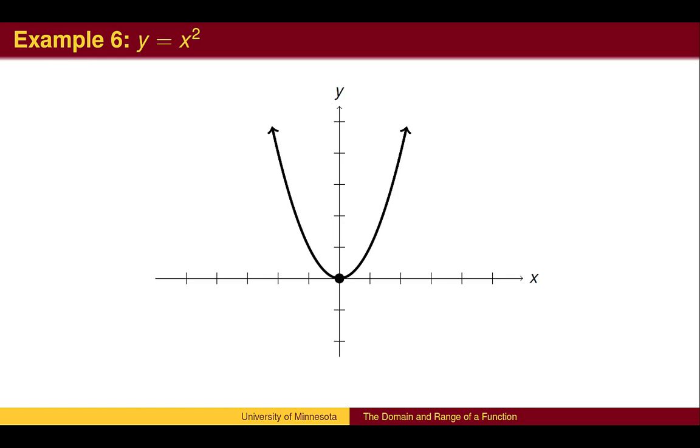As an example, let's examine the function y = x². The vertex is at the origin, and both branches point upward. We can think of the range as the portion of the y-axis on which the graph casts its shadow. If we move left and right from the graph, we see which portion of the y-axis is hit. In this case, the range is all y values greater than or equal to 0.